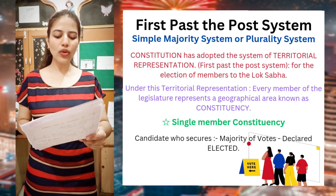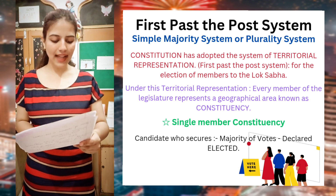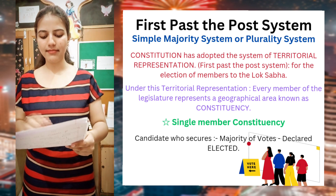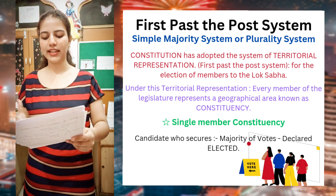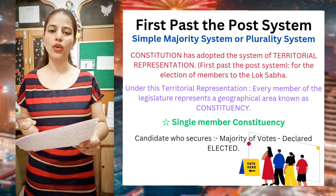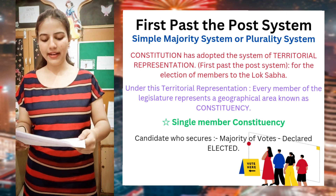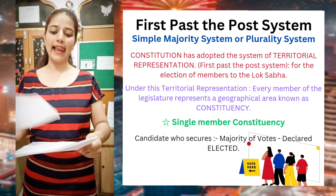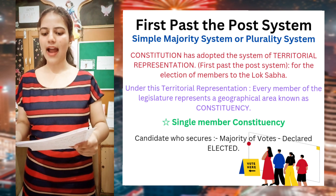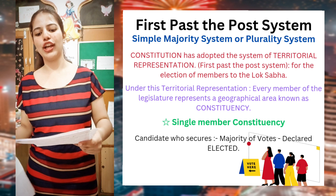Under territorial representation, each member of the legislature represents a geographical area — a single member constituency — because it has the membership of just one person. The candidate who secures the majority of votes will be declared elected.